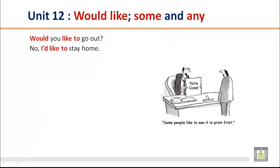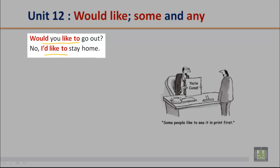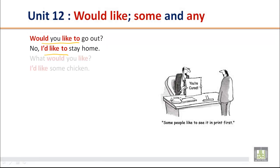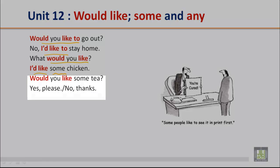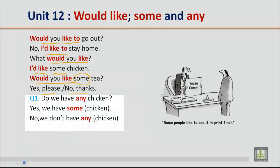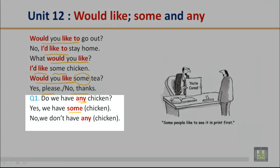Now we'll practice 'would like', 'some', and 'any'. Would you like to go out? No, I would like to stay home. What would you like? I would like some chicken. Would you like some tea? Yes please, or no thanks. We use 'some' with uncountable nouns. Do we have any chicken? Yes, we have some chicken, or no, we don't have any chicken.